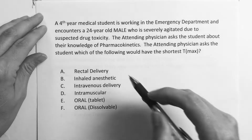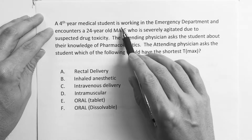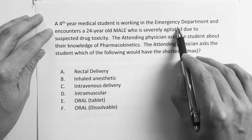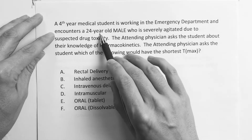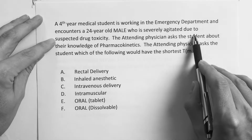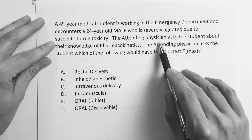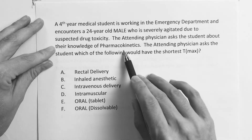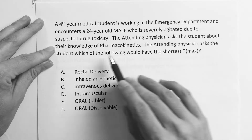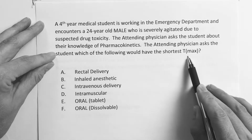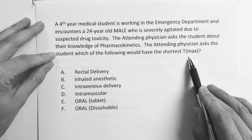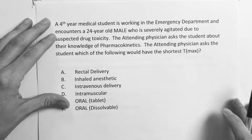Here's the first question: a fourth-year medical student is working in the emergency department and encounters a 24-year-old male who is severely agitated due to suspected drug toxicity. The attending physician asks the student about their knowledge of pharmacokinetics, specifically which of the following would have the shortest T-max.